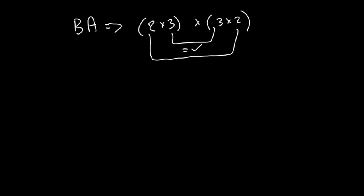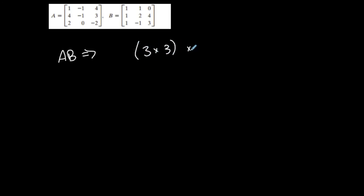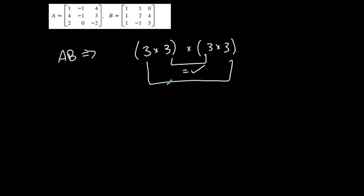I want to do a bigger example just because it might look ugly, but it's not as bad as it seems. Let's do A times B where A is a three by three matrix and B is a three by three matrix — they're both square matrices. Obviously the two middle numbers will be the same, and the product's dimension is going to be a three by three.